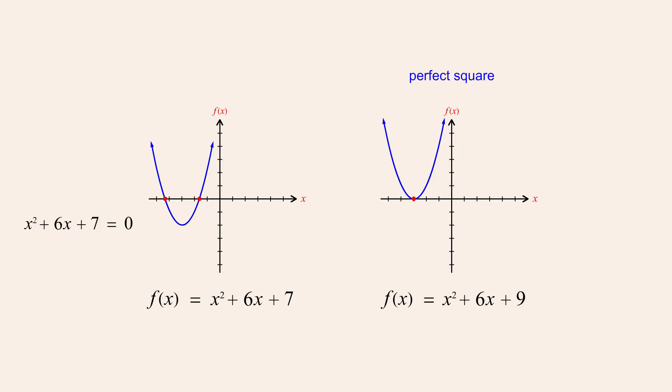However, by completing the square the solutions to this equation can be found. If we add two to each side of this equation, the quadratic's constant term is increased by two, shifting the parabola up by two units. This quadratic function is now the same as the function on the right.